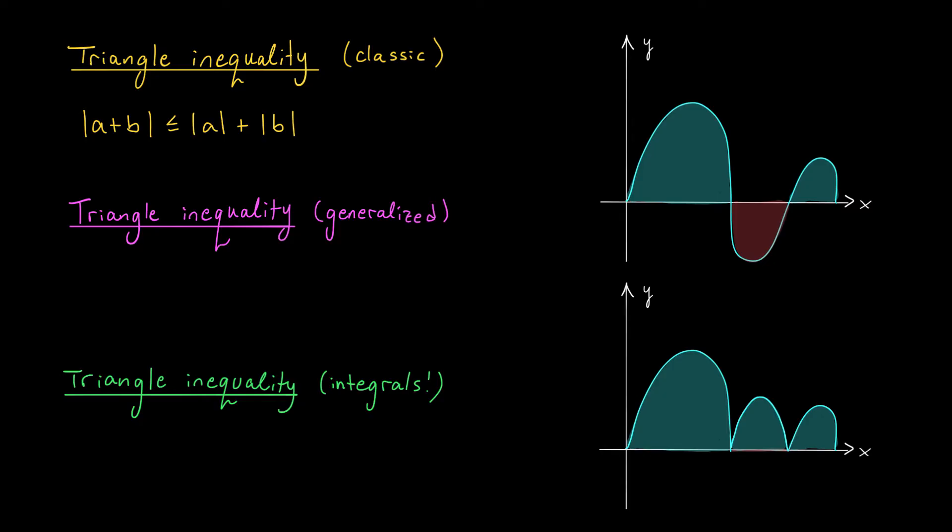However, we are going to need something a little more general. The first way that you could generalize the triangle inequality is to extend it to sums of three or more terms. Using induction, one can prove that if you have a sum of any number of terms, a1, a2, all the way up to an, then if you add them up first and then take the absolute value, that's less than or equal to what you would get if you added up their absolute values.